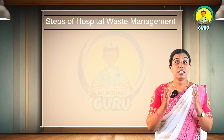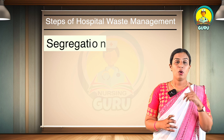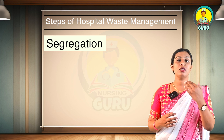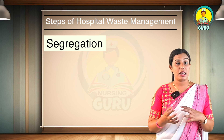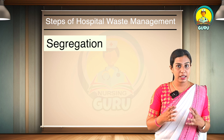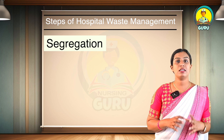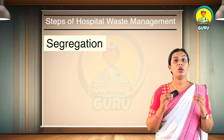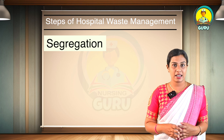The steps of hospital waste management: the first step is segregation. Segregation is done at the source of generation by the persons who are generating the waste. They should be aware of the different color coding given for non-risk waste, risk waste, and waste with sharps, so that effective segregation takes place at the point of generation.